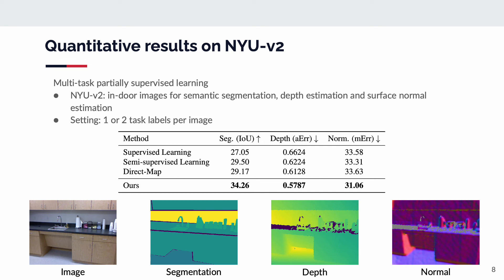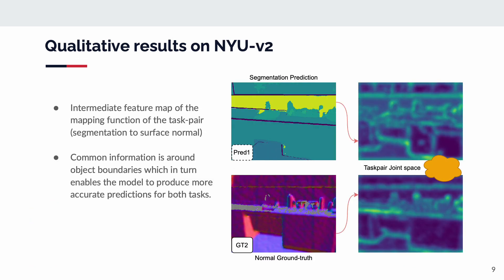The supervised learning baseline does not use unlabeled samples. We also visualize the joint-space feature map of semantic segmentation prediction and surface normal ground truth in the right column. The common information is around object boundaries, which in turn enables the model to produce more accurate predictions for both tasks.